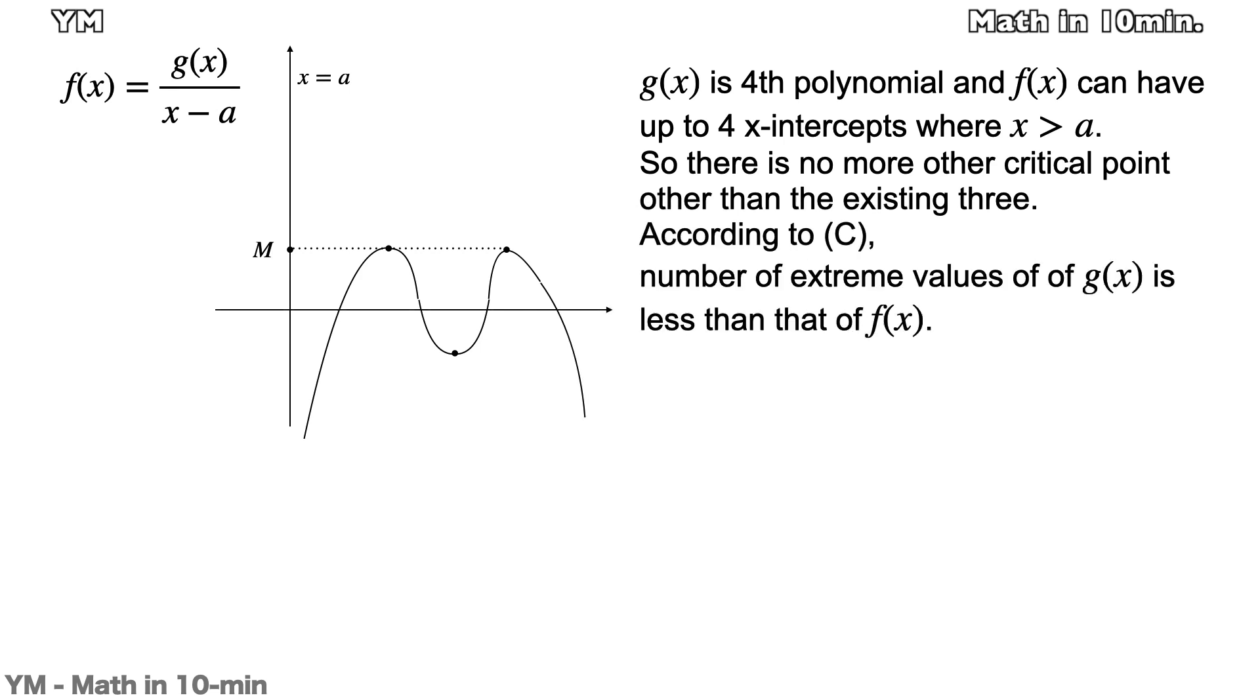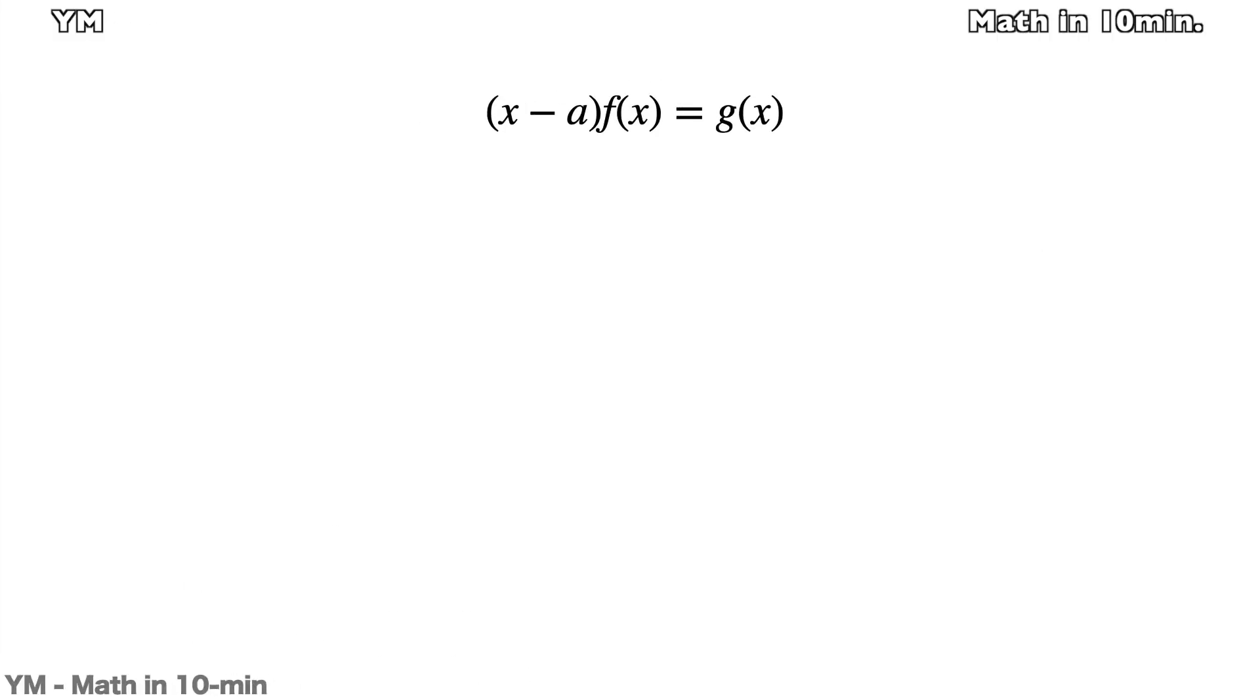Then by condition c, the number of extreme points of g(x) is two or less. Now let's take the derivative of g(x). g(x) is equal to (x - a) times f(x). Then by product rule, g'(x) becomes f(x) + (x - a)f'(x).